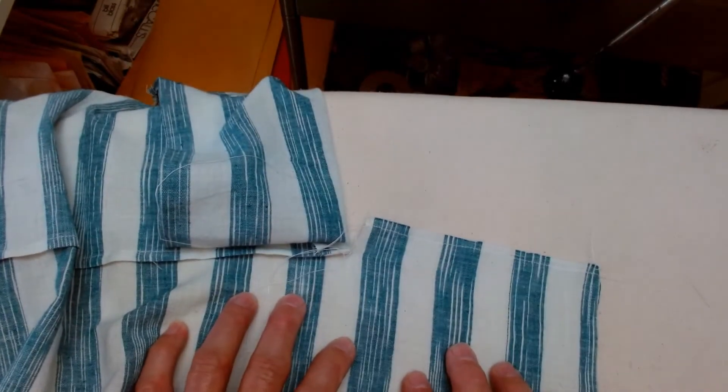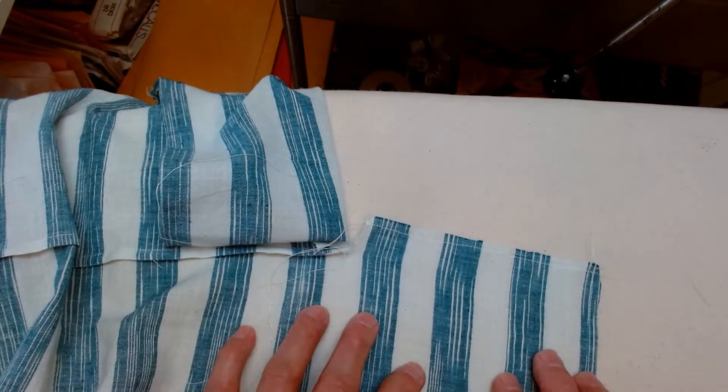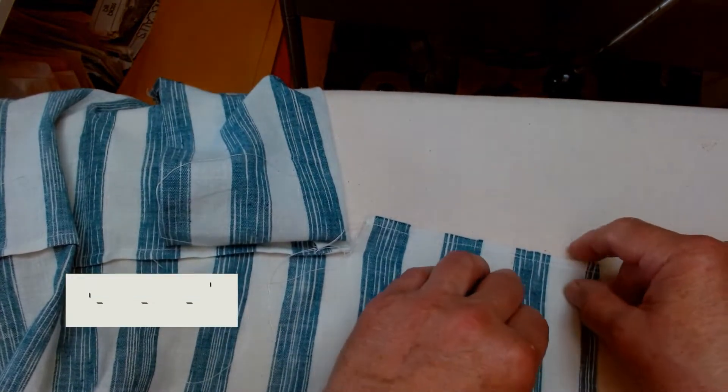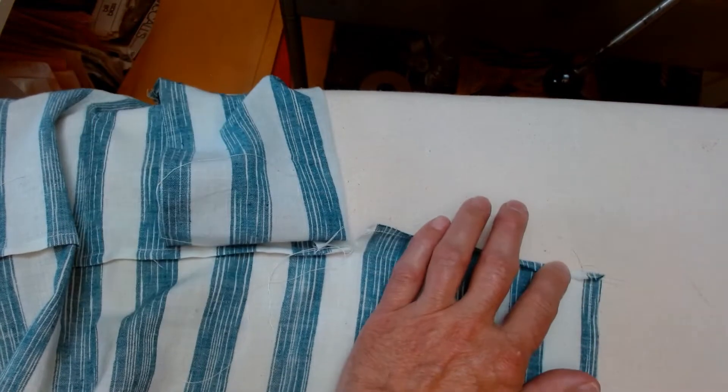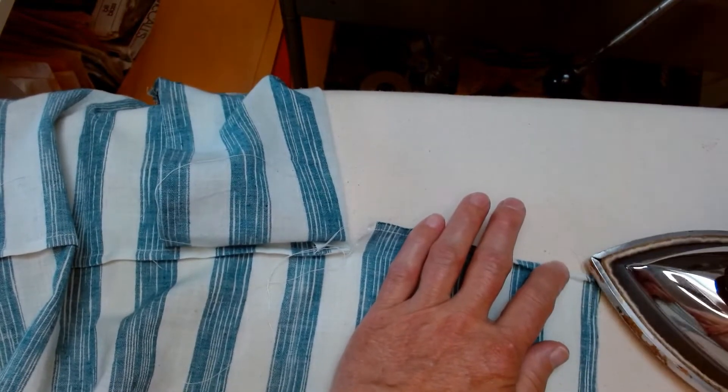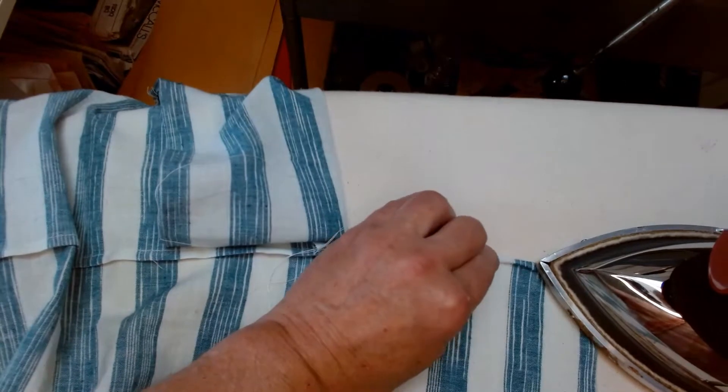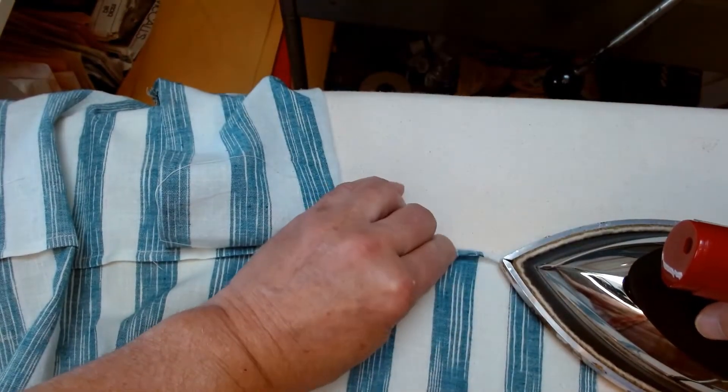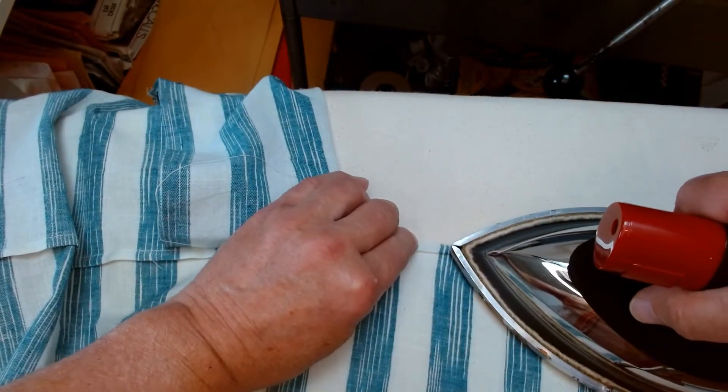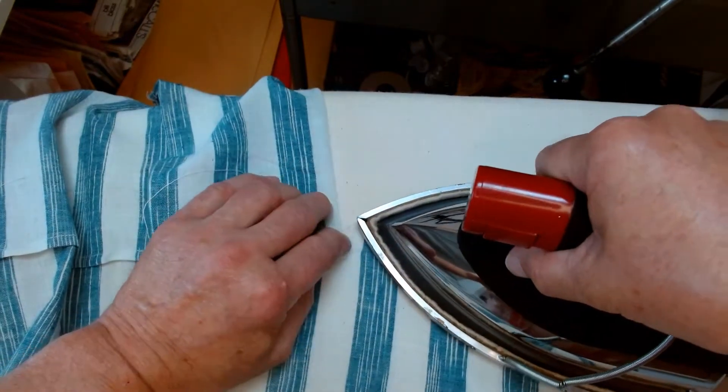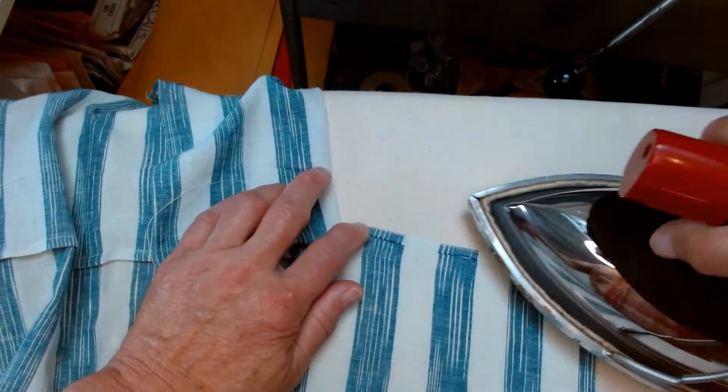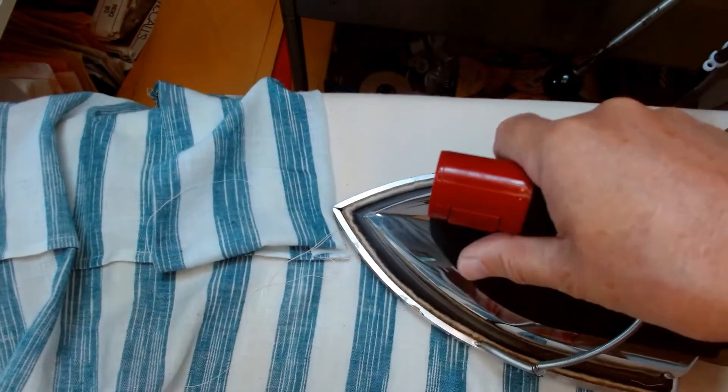Okay, we're back at the ironing board and the next step now that all the stay stitching is done is to just fold back along the edge of stay stitching and give this a good press all the way around. You will get a nice crisp edge all along that line of stay stitching. It makes this part so much easier.